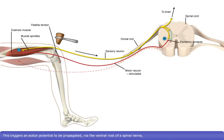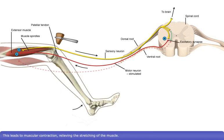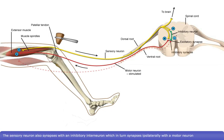This triggers an action potential to be propagated via the ventral root of a spinal nerve to presynaptic axon terminals of neuromuscular junctions in the stretched skeletal muscle fibers. This leads to muscular contraction, relieving the stretching of the muscle.